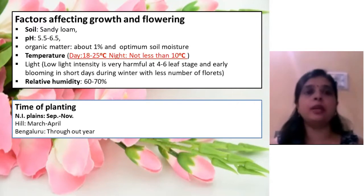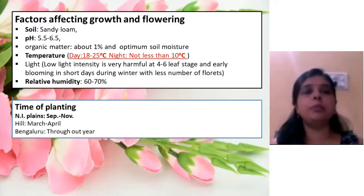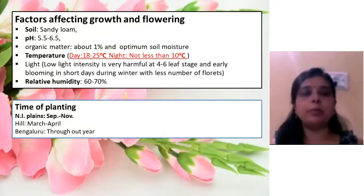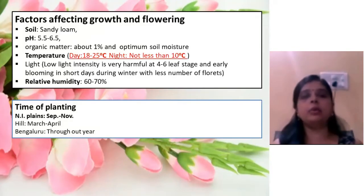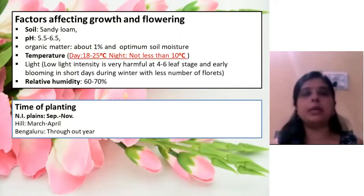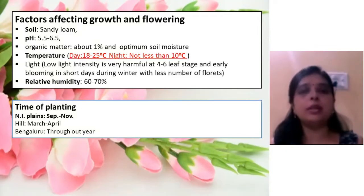Regarding time of planting: September to November is ideal in North Indian plain conditions. For hilly areas, gladiolus is planted in March to April. In Bangalore-like climatic conditions, it can be planted throughout the year. In Ranchi also, the climatic condition is somewhat similar to Bangalore, so gladiolus can be planted around the year.